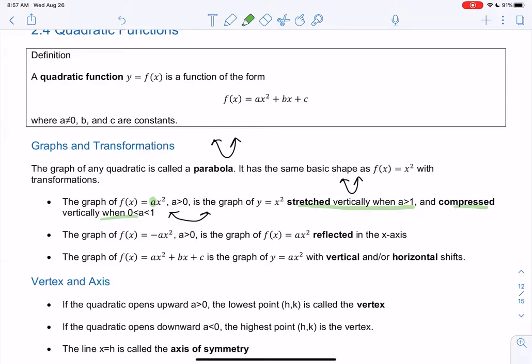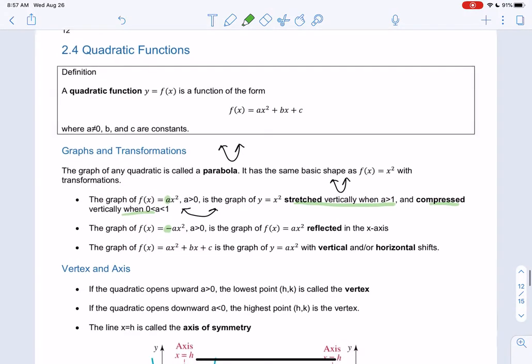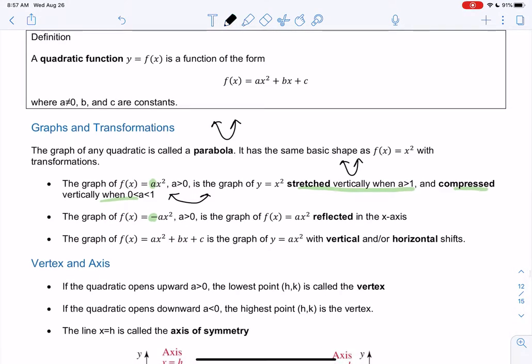The negative makes it go upside down. So same graph, but upside down. And then the bx plus c is what makes it shift. So it's not an immediate horizontal and vertical shift. We'll have to check that out in a second.